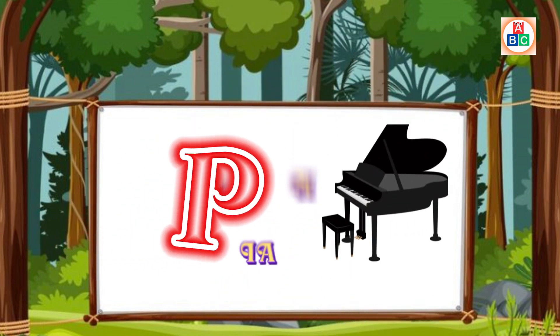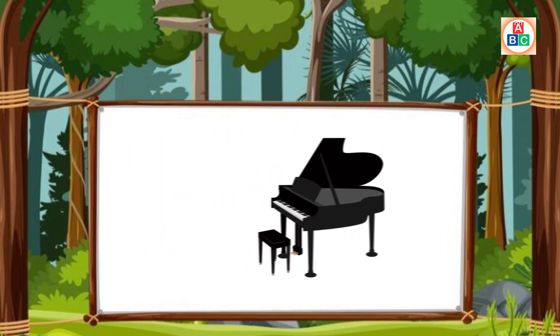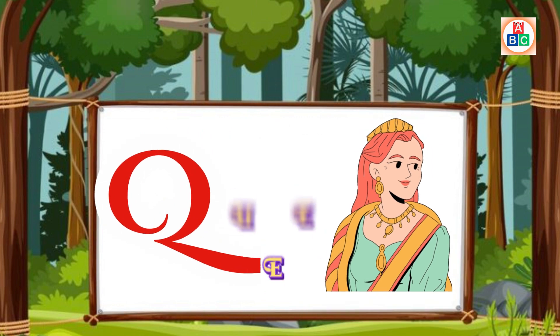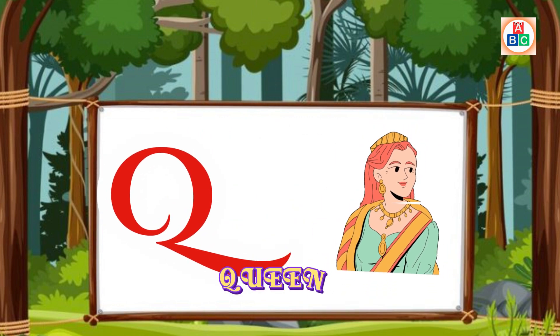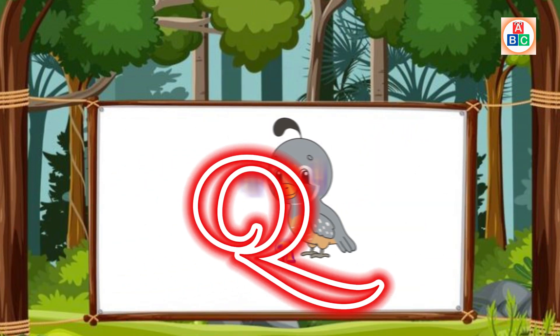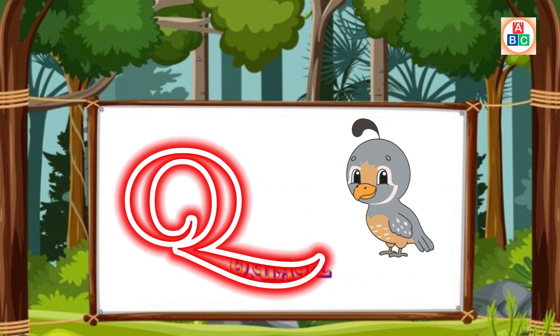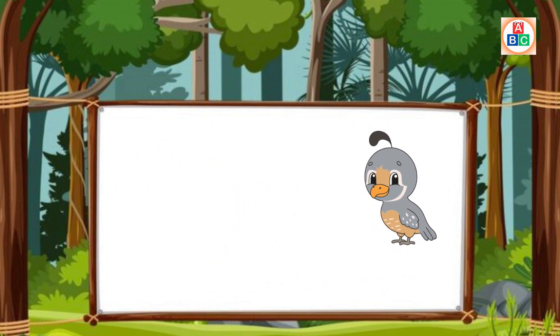P is for Piano. P. P. Piano. Q is for Queen. Q. Q. Queen. Q is for Quail. Q. Q. Quail.